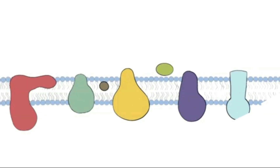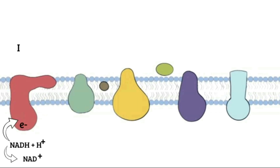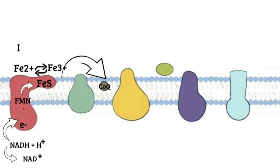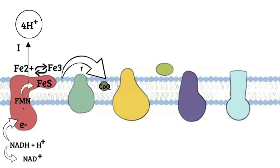The electron transport chain begins when NADH donates its electrons to the first complex. In Complex I, we have FMN and FES. These are redox reactions, and the iron exists in the form of Fe2+ or Fe3+ depending on whether they donate or receive electrons. The electrons are transferred from FMN to FES, and then from FES to CoQ. The redox reactions generate energy, and this energy is used to pump four protons into the intermembrane space.